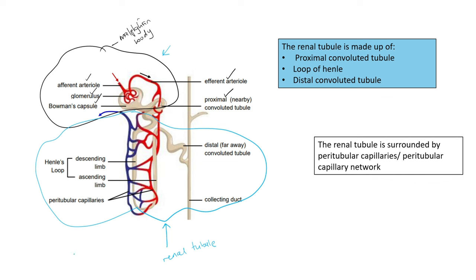The renal tubule is made up of three parts mainly: the proximal convoluted tubule, the loop of Henle, and the distal convoluted tubule. In the diagram, the proximal convoluted tubule is the part nearest to the Malpighian body. Don't use the word 'nearby' — it's too ambiguous; always call it the proximal convoluted tubule.